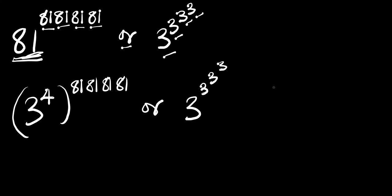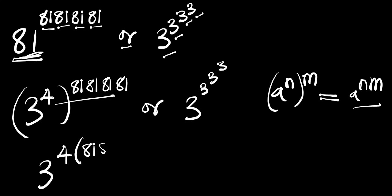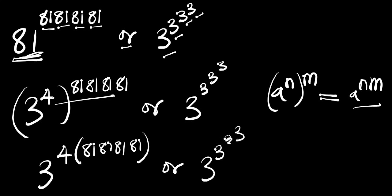Now let's consider this identity: if you have a to the power of n, all to the power of n, this equals a to the power of n times n. We are going to apply this identity right here. That means we are going to have 3 to the power of 4 times 81, 81, 81, 81. Or 3 to the power of 3 to the power of 3 and to the power of 3.